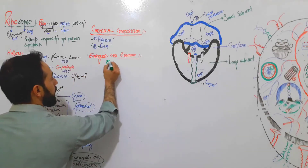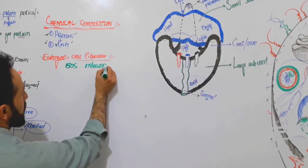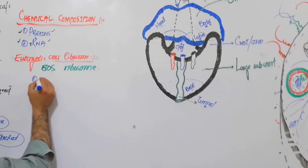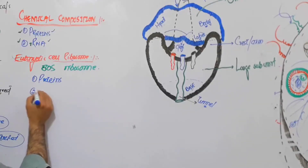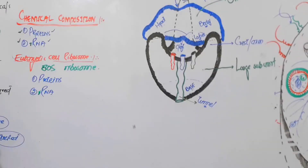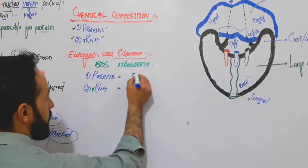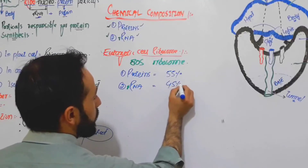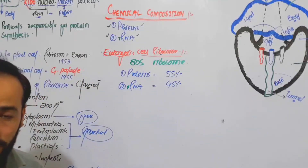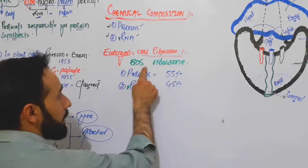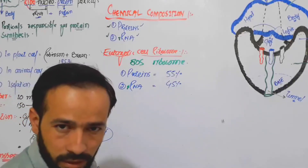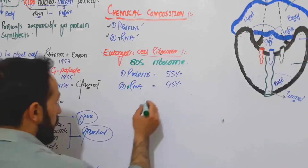In the eukaryotic cell we have the 80S ribosome. From the previous lecture we know that the ribosome is made up of two important components: proteins and ribosomal RNA. The percentage of proteins in the 80S ribosome is about 55%, and the remaining 45% is ribosomal RNA.